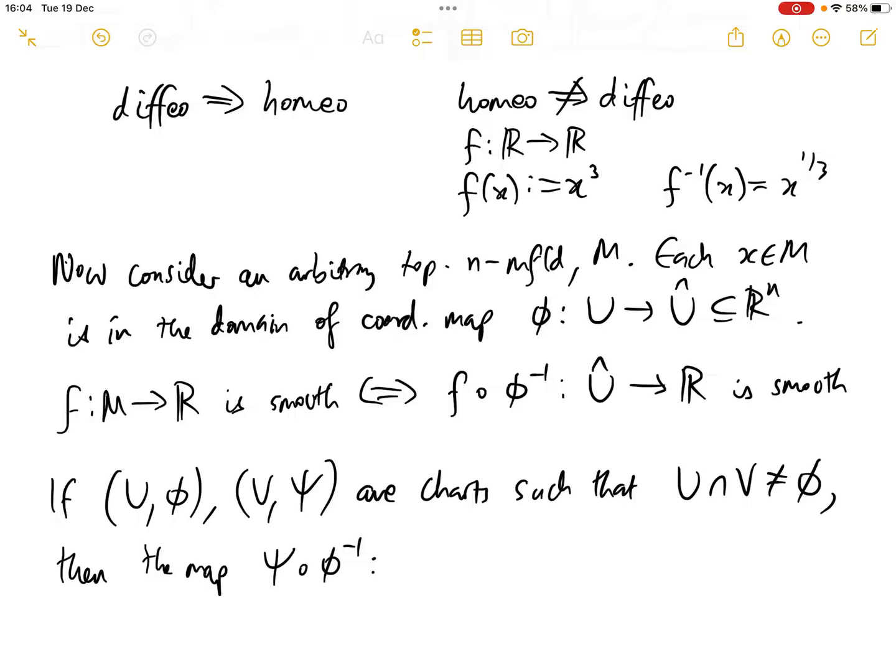Phi goes from U to phi of U. So if we start in phi of the intersection, then phi inverse would take us back to U intersect V, and then psi would take us into psi of U intersect V. So this map is called the transition map from phi to psi.